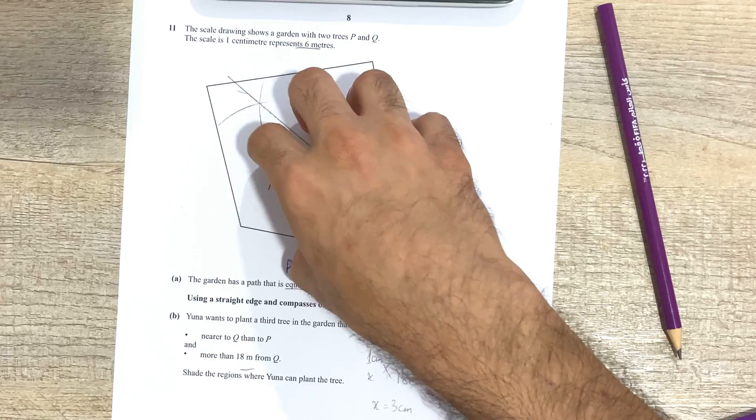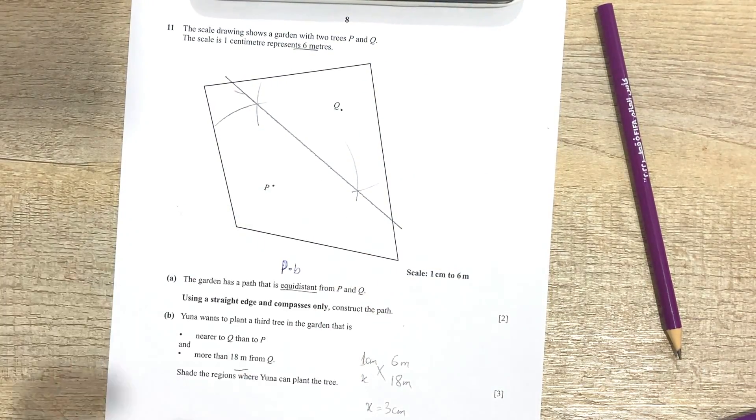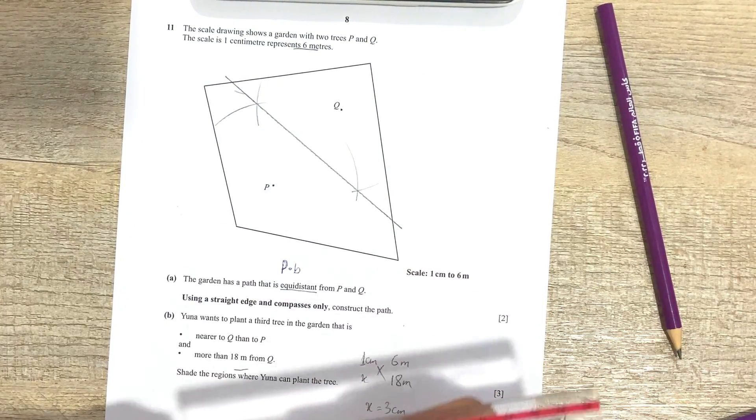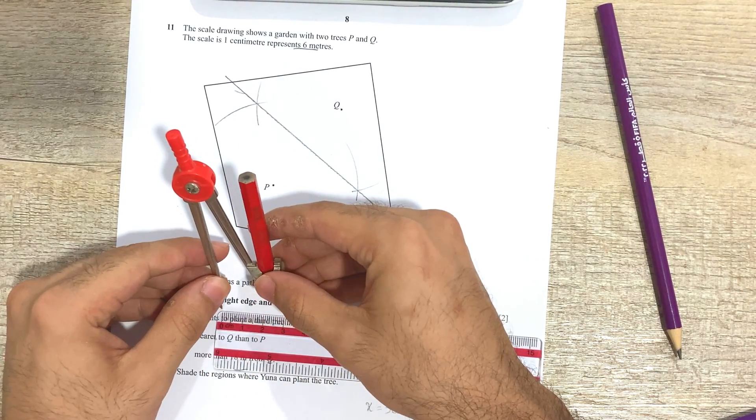But I don't need to make an entire circle because whatever tree that she's going to plant is going to be inside the garden. So that means I'm just going to make an arc such that it covers this region. Now that arc has to be of radius three centimeters.